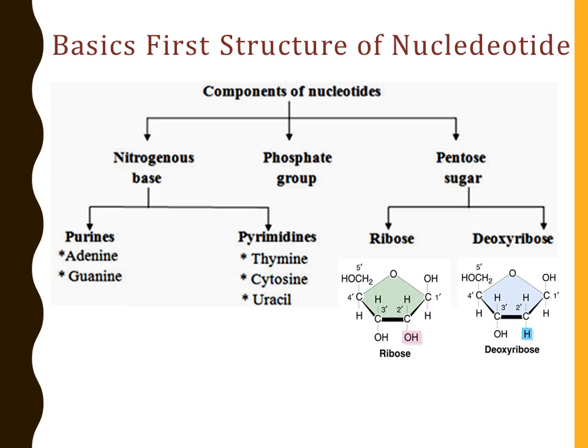As shown in the diagram, a pentose sugar is a 5-carbon ring and these carbons are named as 1' carbon, 2' carbon, likewise up to 5' carbon. If this structure is clear to you, then you will be able to understand when we say 3' position or 5' position of a DNA strand in the discussion ahead.